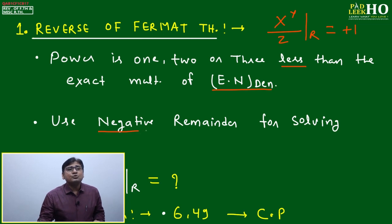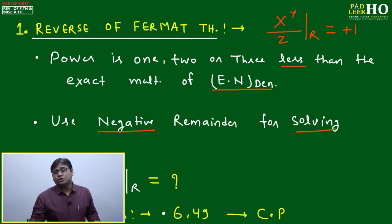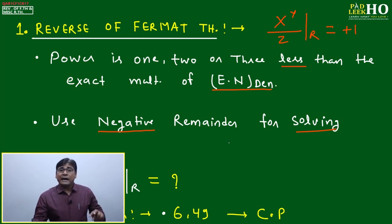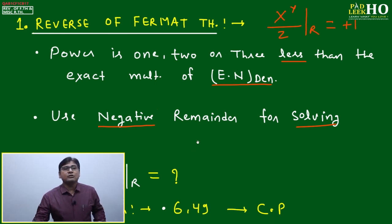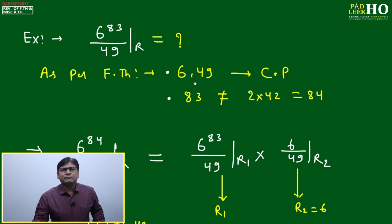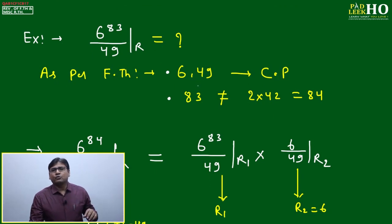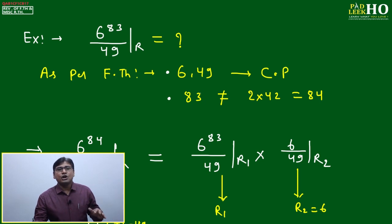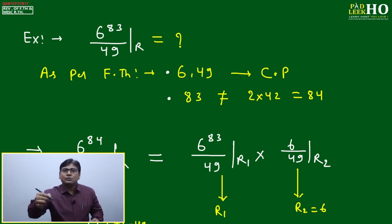When applying the Reverse of Fermat's Theorem, always use negative remainders for solving — you need to be fast at converting between negative and positive remainders. We'll understand this concept through problems, because writing it in theoretical language makes it very lengthy and confusing. Let's take an example.